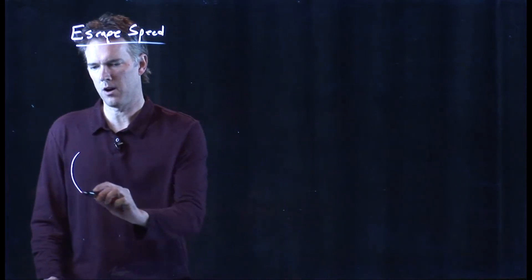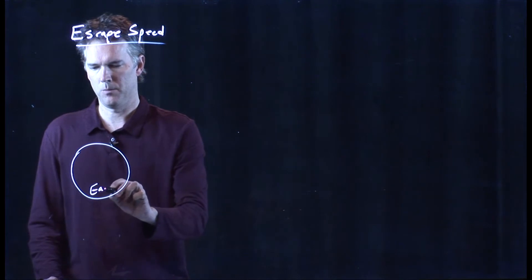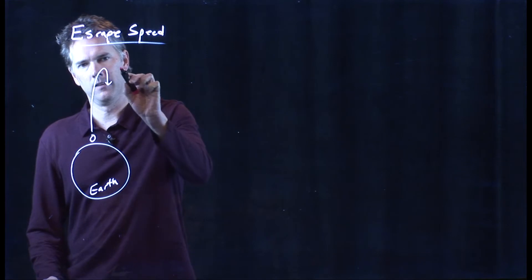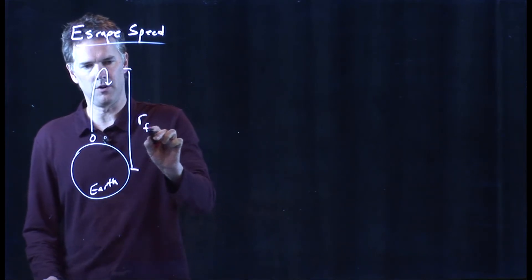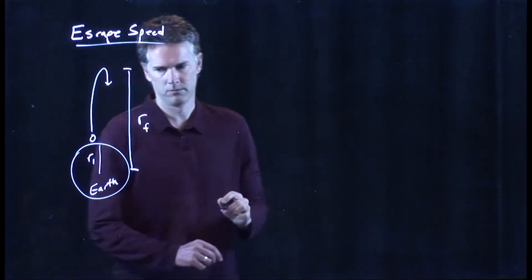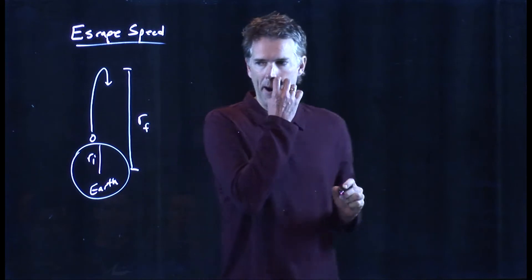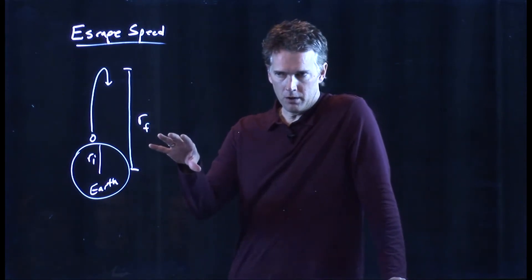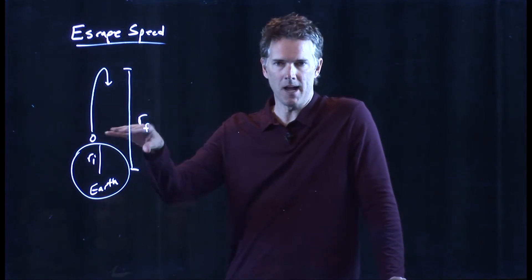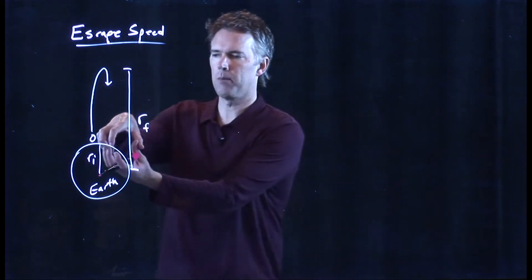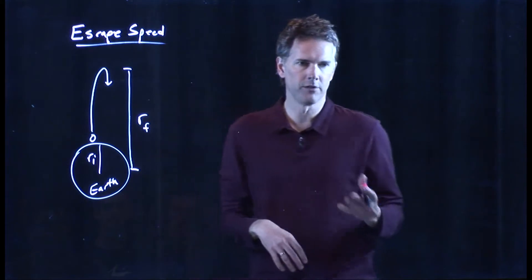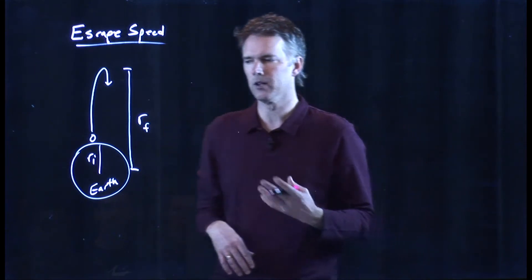Here's our Earth, and we're going to take an object and toss it really, really high. We'll call that distance r_final. We of course start from r_initial. When you're close to the surface of the Earth, you can just worry about gravitational potential energy as mgh. But when you're talking about going very far away from the Earth, you can no longer just use mgh — we have to be a little bit more careful.